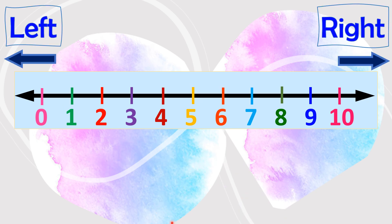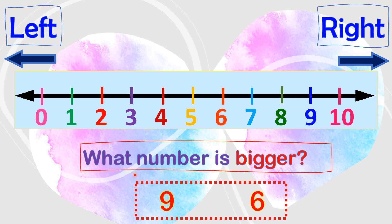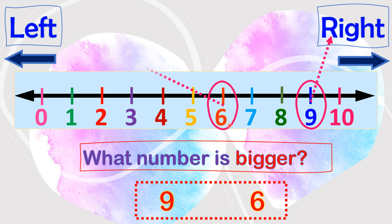Now it's your turn. We have 9 and 6 as an example. Please tell me which number is bigger. So what's the first step? I will circle 9 and 6 on the number line. Yes. Now tell me, which side of the number line is 9? Right side. Correct. What about 6? Left side. Correct. Now tell me, which number is bigger? 9. Why is 9 the bigger number? Because it's at the right side. Good job.